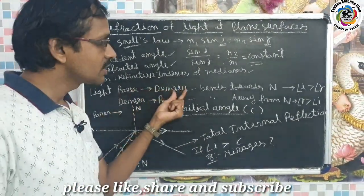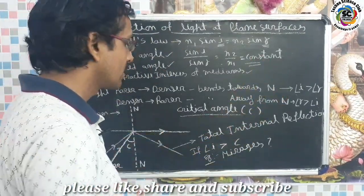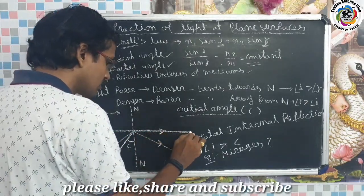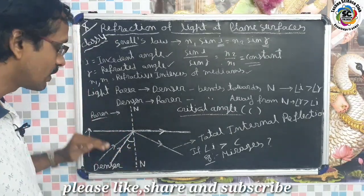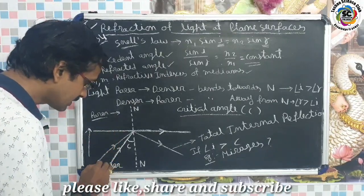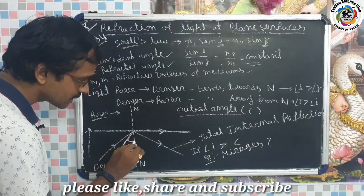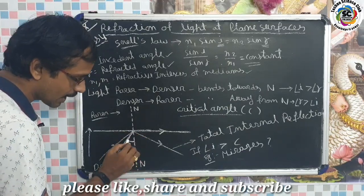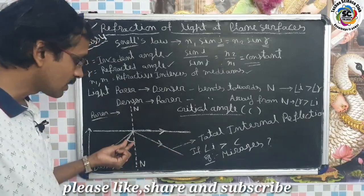To summarize: rarer medium to denser medium — bends towards the normal, angle i greater than angle r. Denser medium to rarer medium — bends away from the normal, angle r greater than angle i. Observe the figure carefully. The borderline separates the rarer medium above and the denser medium below — air is the rarer medium and water is the denser medium.